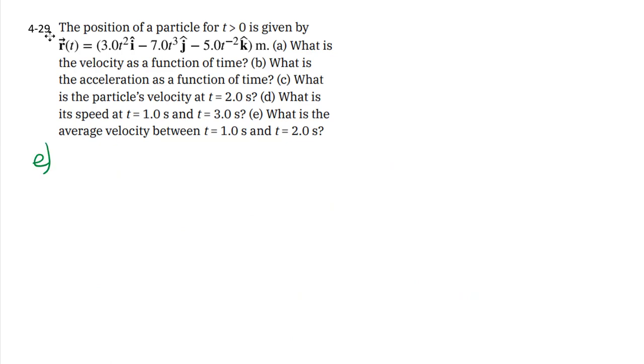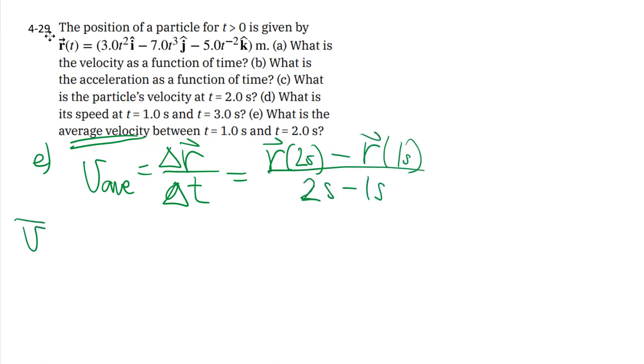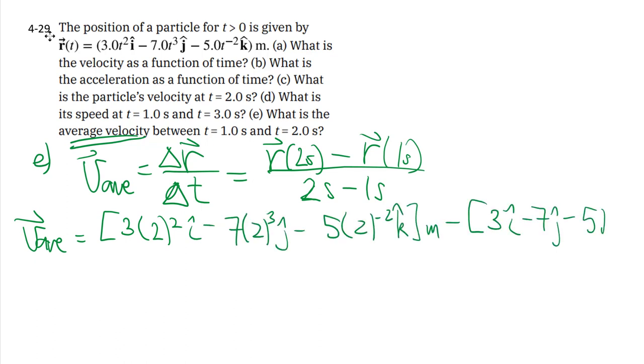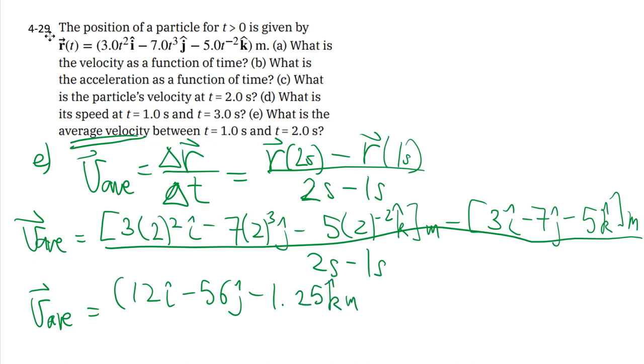Finally, part e, we're looking at average velocity. So we don't look at the derivative at all. We're talking about delta r over delta t, the change in position over change in time. In this case, we're comparing two seconds and one second. We sub it all in. The one second case is a little easier. Essentially, it becomes an exercise in vector subtraction.